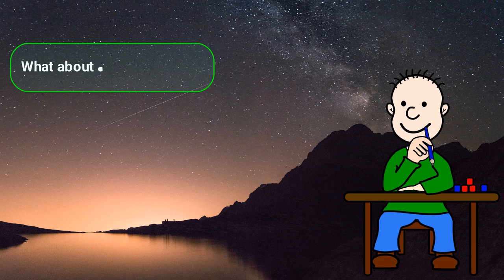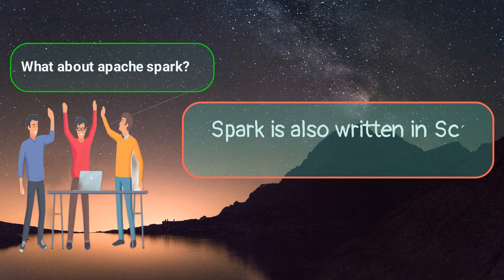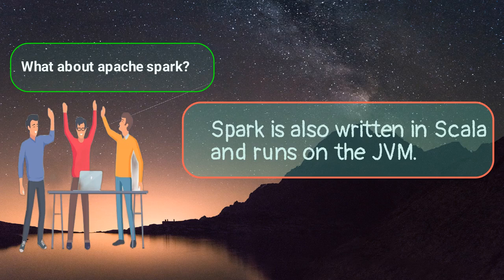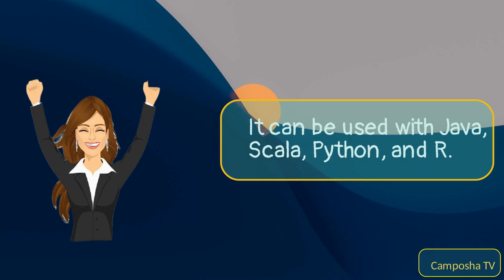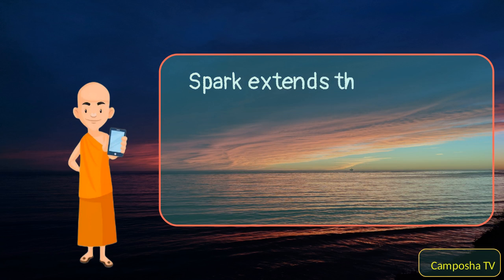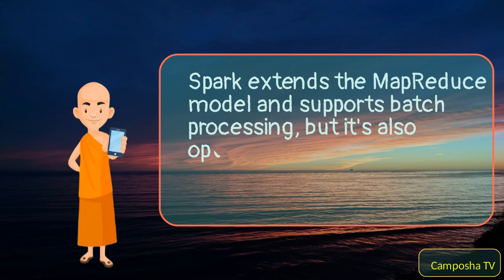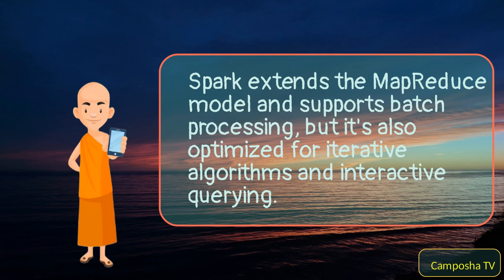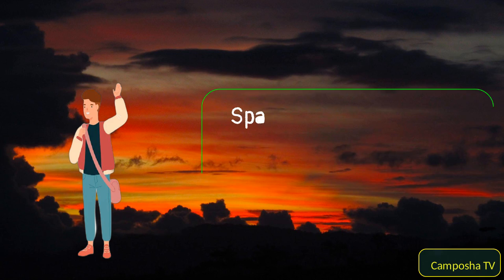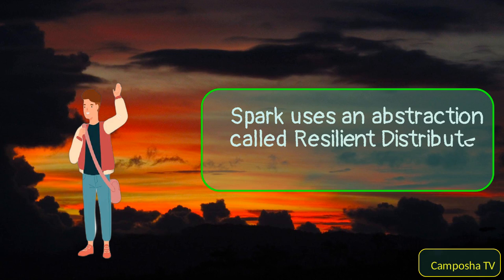What about Apache Spark? Spark is also written in Scala and runs on the JVM. It can be used with Java, Scala, Python, and R. Spark extends the MapReduce model and supports batch processing, but it's also optimized for iterative algorithms and interactive querying. Spark uses an abstraction called Resilient Distributed Datasets, or RDDs.